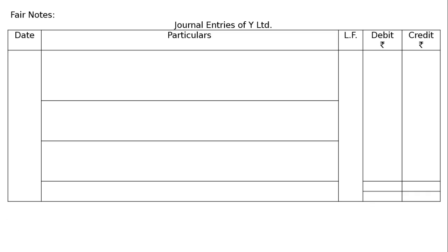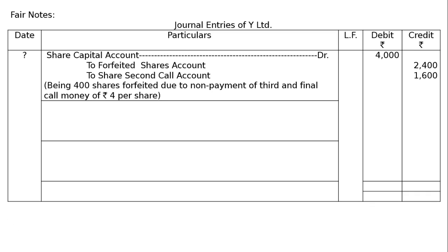Now for the journal entries of Y Limited, draw the proper format. First entry: Share Capital Account debited — 400 shares at rupees 10 fully called up, that is rupees 4000. To Forfeited Shares Account — 400 into 6, that is rupees 2400. To Forfeited Shares Account — amount received on application etc., rupees 2400.